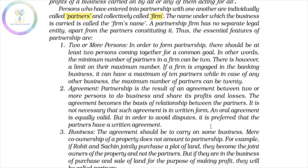The first essential feature is Two or More Persons. The minimum number of partners is two. The maximum number is limited: if you have a firm in a banking business, the maximum is 10 partners. For any other business, the maximum number of partners is 20.